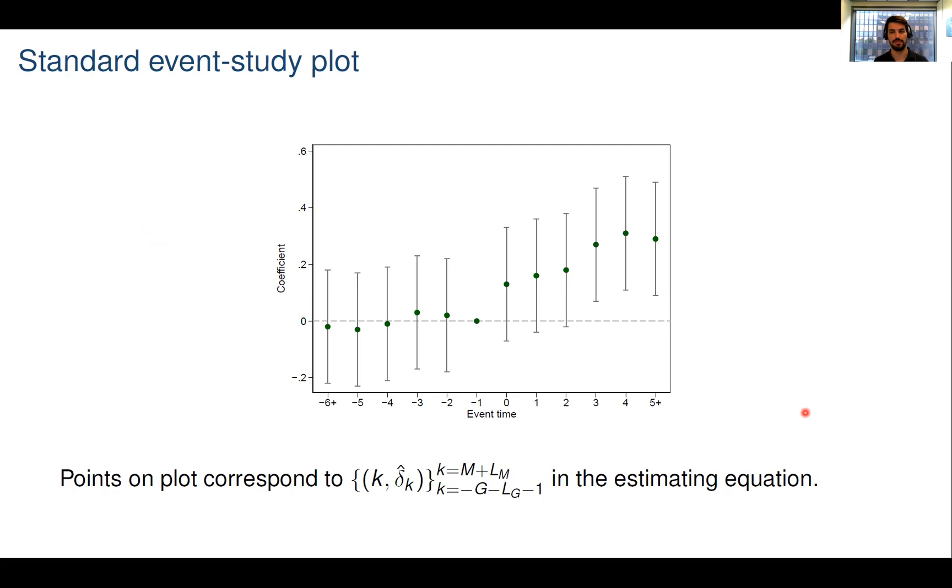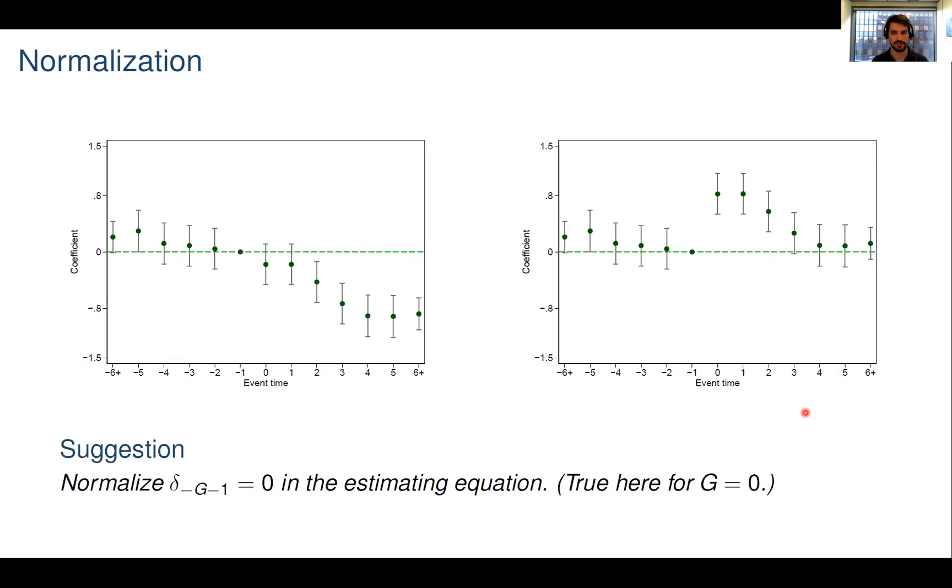The first thing I want to talk about is that by construction, the z terms on the previous estimating equation are going to be collinear. So what that means is that not all deltas are going to be identified, and we're going to have to impose some sort of normalization. Our first suggestion, which is already somewhat common practice, is to normalize the coefficient immediately preceding any anticipatory effect, and often that means the coefficient at minus one. Here, the treatment happens at event time zero, so this is when the event happens, and we normalize the coefficient at minus one immediately preceding the event. We think that the first lead is a good default because this enables convenient tests of hypothesis relative to event time minus one.